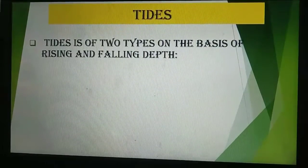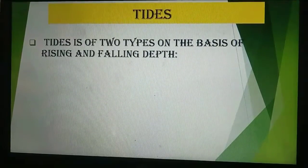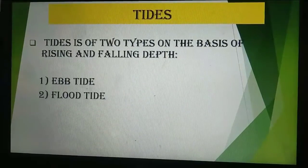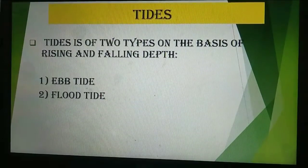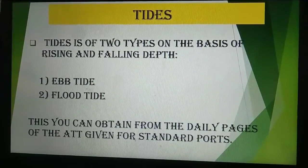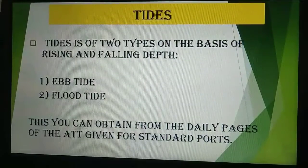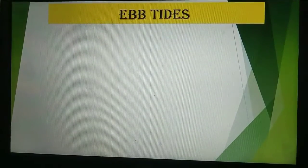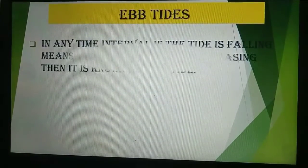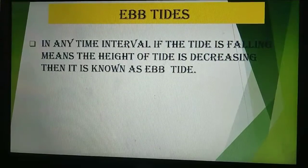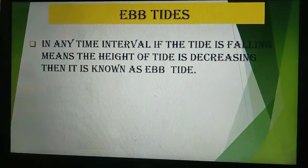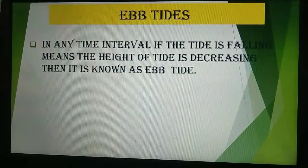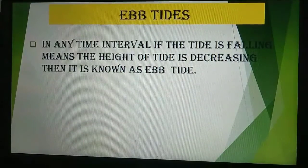Now, on the basis of the rising and falling depth, tides are divided into two parts: ebb tide and flood tide. This you can obtain from the daily pages of the Admiralty Tide Table given for the standard ports. What is ebb tide? In any time interval, if the tide is falling — meaning the height of tide is decreasing — then it is known as ebb tide.